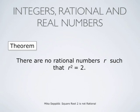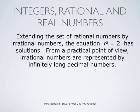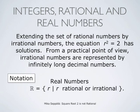We will show in this video that there are no rational numbers R such that R squared equals 2. This means that the set of rational numbers is not complete, in the sense that we cannot measure all distances and lengths by rational numbers only. We must extend the set of rational numbers by so-called irrational numbers, which are represented by infinitely long decimal numbers. These irrational numbers together with rational numbers form the set of real numbers, capital R, in which the equation R squared equals 2 has two solutions: plus and minus square root of 2.